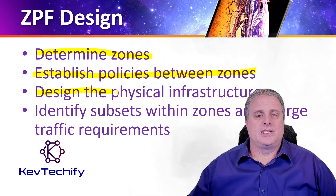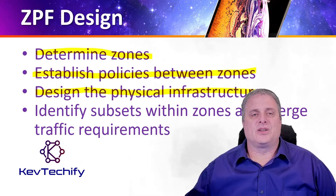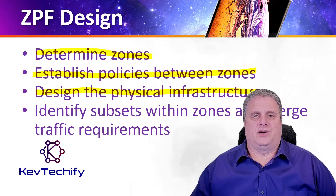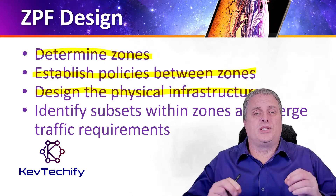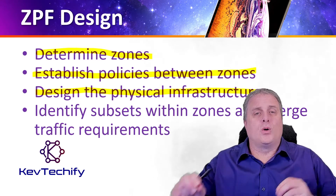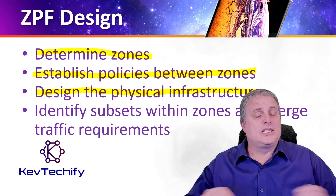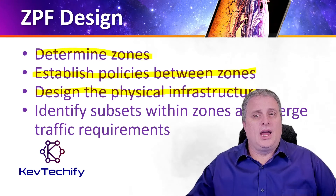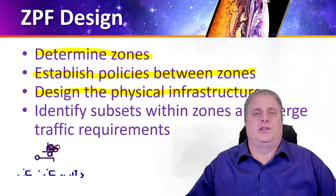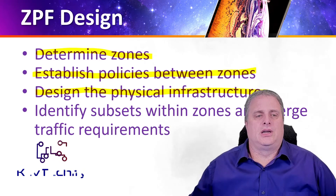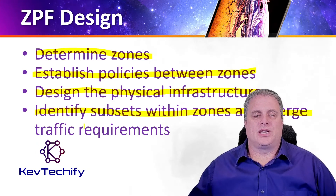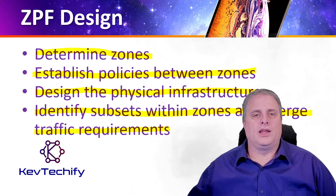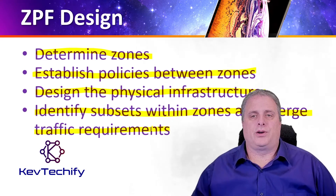Step three is to design the physical infrastructure. This includes dictating the number of devices between the most secure and least secure zones, and also determining redundant devices. And finally, step four: identify subsets within the zone, and then merge those traffic requirements.